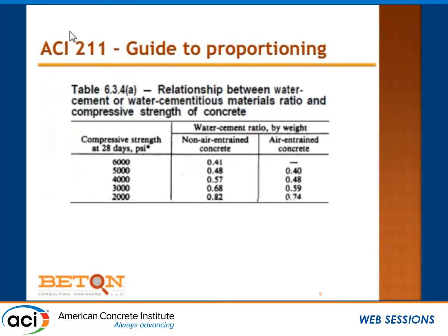This is a table from ACI 211, the current document in the ACI Manual of Concrete Practice on Guide to Proportioning Concrete Mixtures, which is frequently cited in specifications. It says that for 4,000 PSI non-air-entrained concrete, I need a water-to-cement ratio of 0.57. If I need 0.40 for another reason — permeability, let's say — we start to run into difficulties with a perceived conflict between those two values.